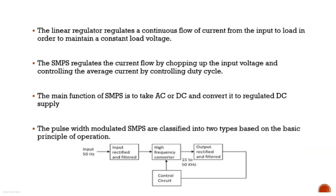There are two types of regulators: linear regulator and SMPS-based regulator. A linear regulator controls the flow of current from input to output to produce a constant output voltage. In SMPS, it chops the input voltage and controls the duty cycle to keep the average current constant, hence giving a regulated DC supply.